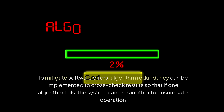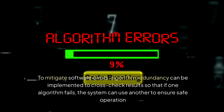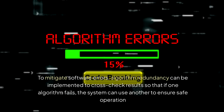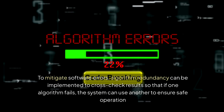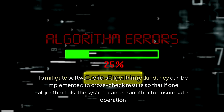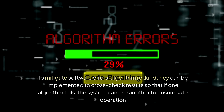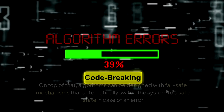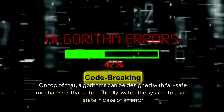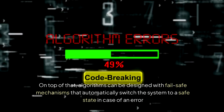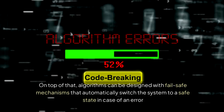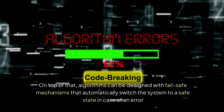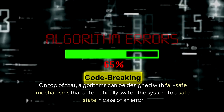To mitigate software errors, algorithm redundancy can be implemented to cross-check results so that if one algorithm fails, the system can use another to ensure safe operation. On top of that, algorithms can be designed with fail-safe mechanisms that automatically switch the system to a safe state in case of an error.